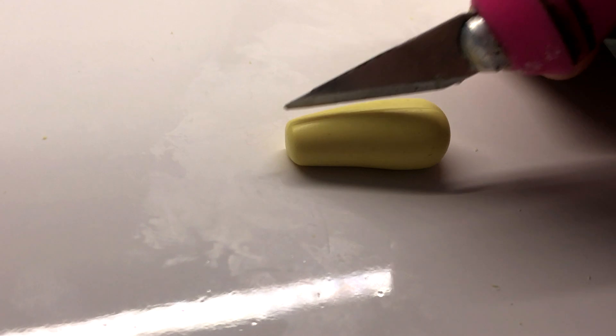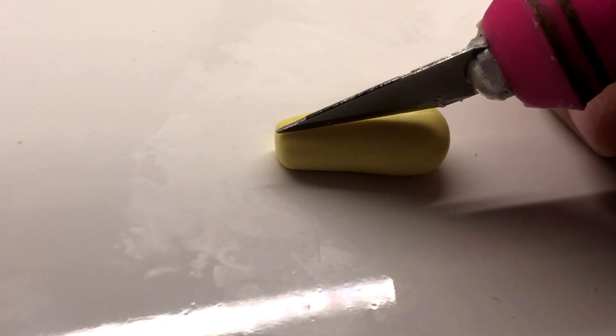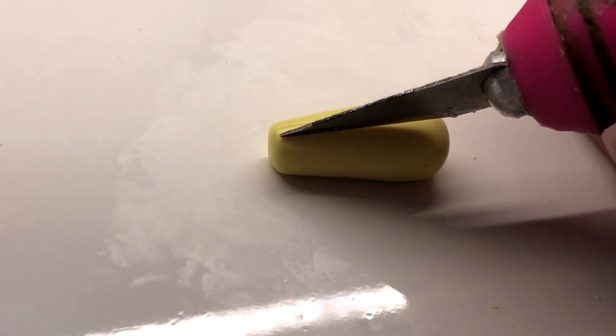So I'm starting by using my blade to make the indentations for my corn kernels. This will serve as my initial guideline.